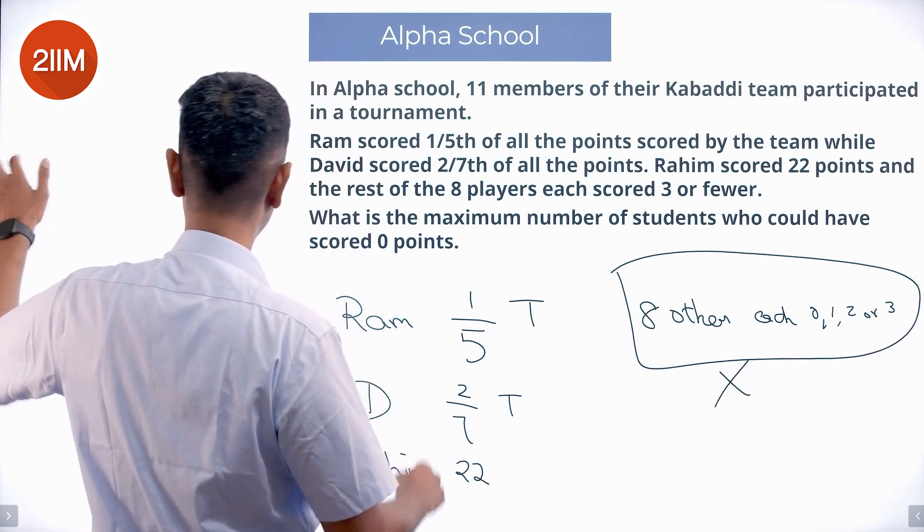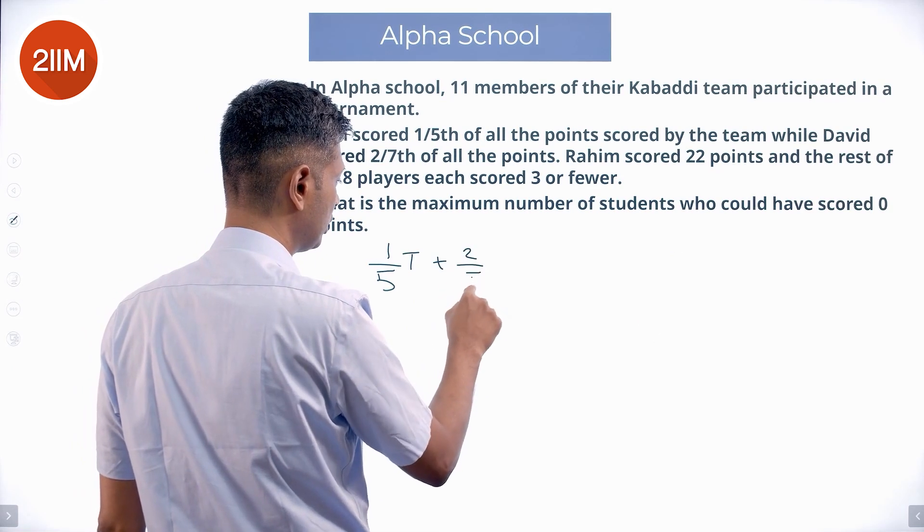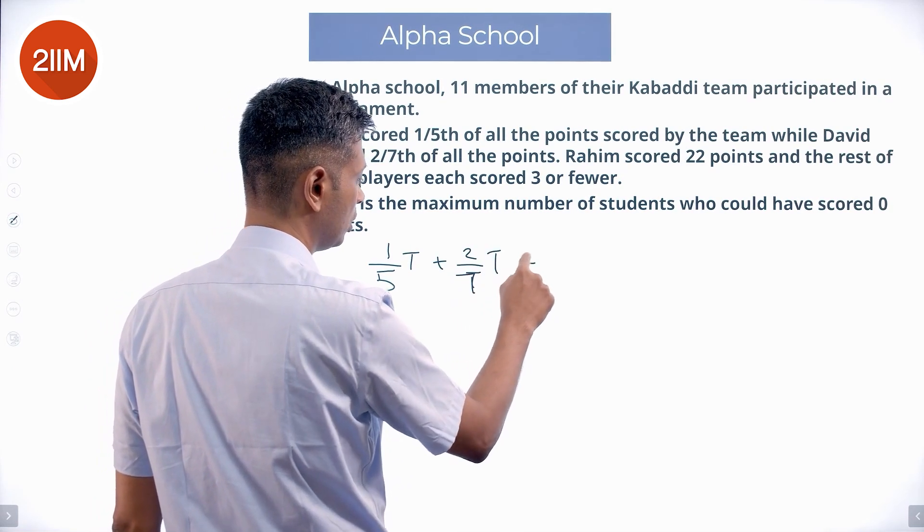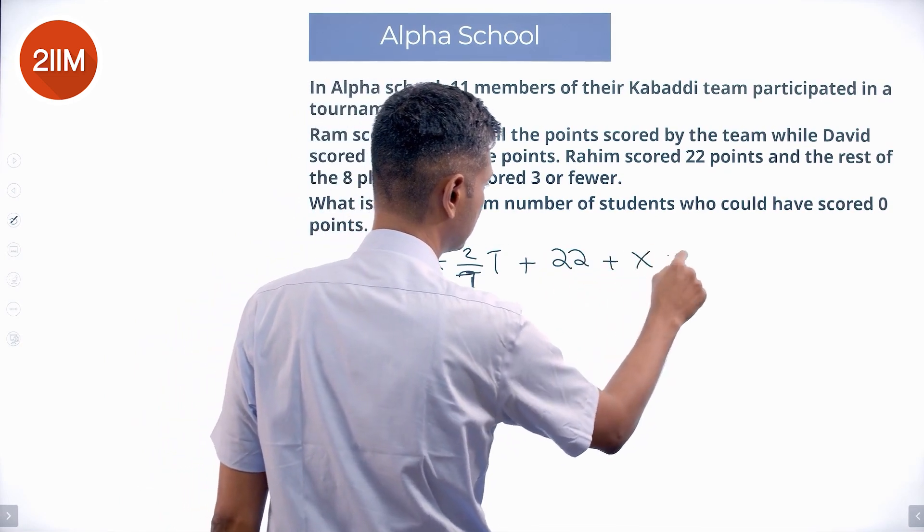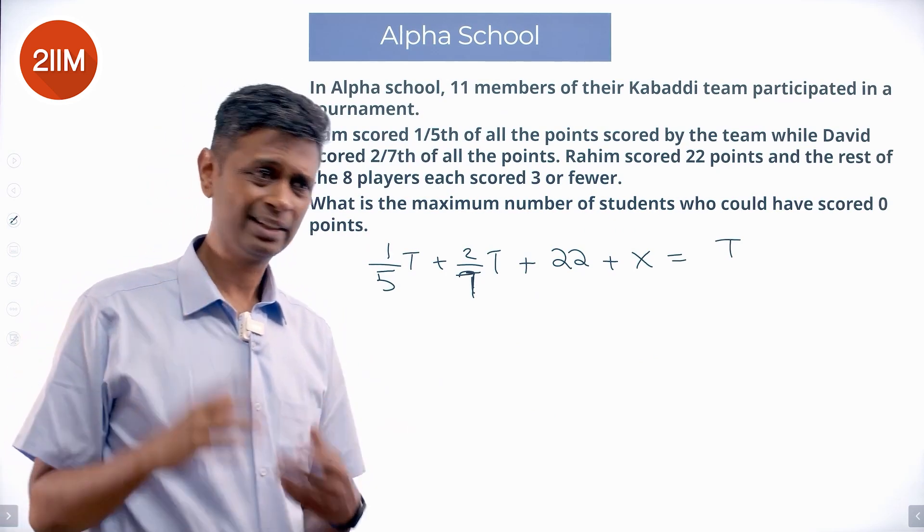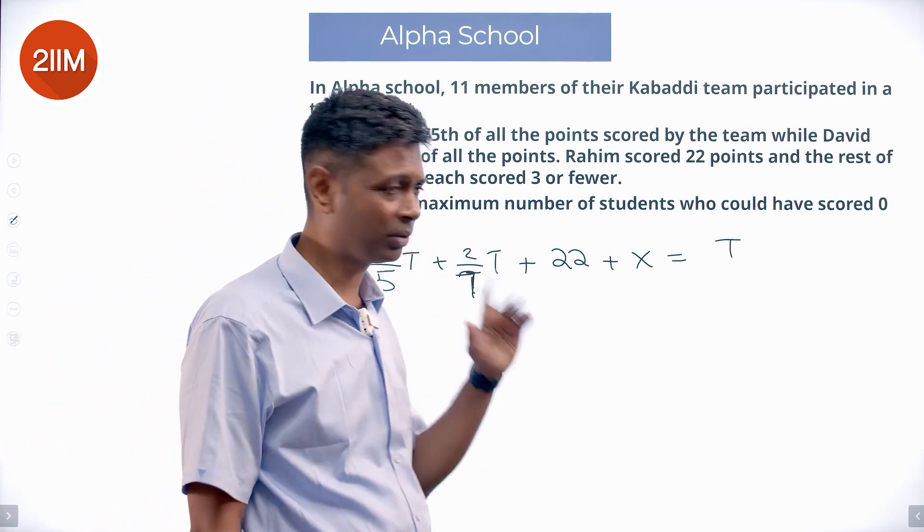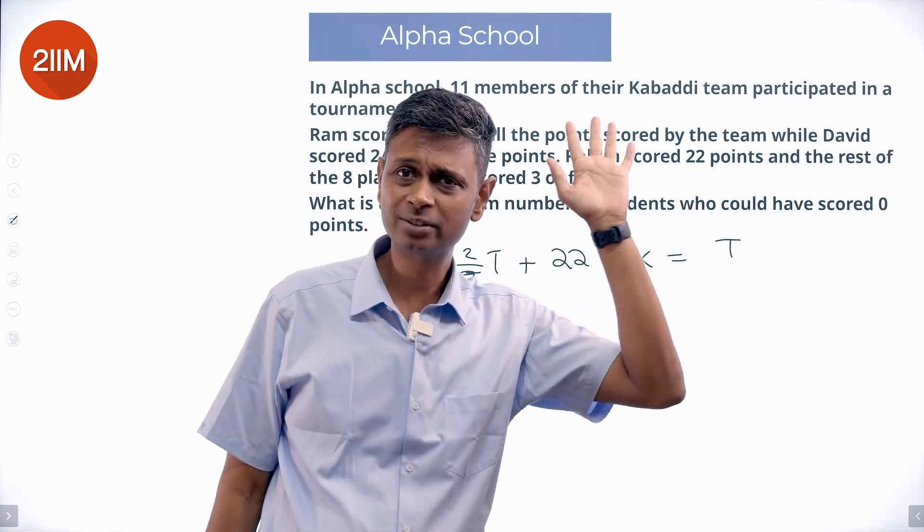So what do we have? I have one-fifth of total plus two-seventh of total, two-by-seven of total plus 22 plus X equal to total. Total number of points are there. One-fifth is by one guy, two-seventh is one guy, 22 is one guy and then there is remaining adding up to total.